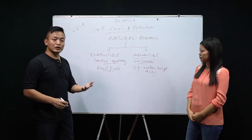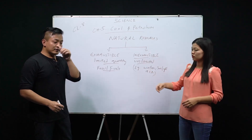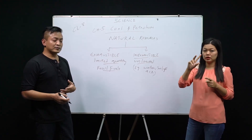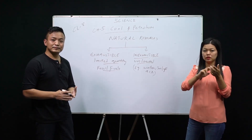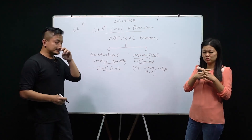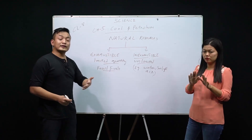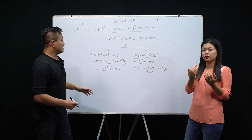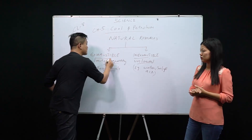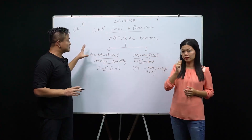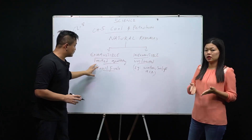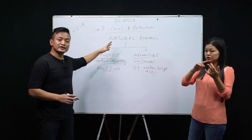We can also discuss renewable and non-renewable resources. Renewable resources are those which can be renewed — production does not take much time. Non-renewable resources are like fossil fuels, because producing coal or petroleum takes millions of years. Under fossil fuels we have three types: coal, petroleum, and natural gas.